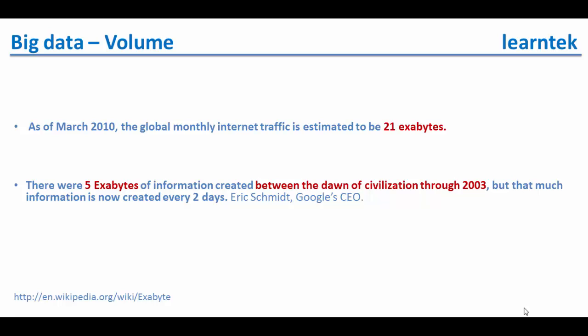As of March 2010, the global monthly internet traffic is estimated to be 21 exabytes of data. There were 5 exabytes of information created between the dawn of civilization through 2003. But that much information is now created every 2 days.